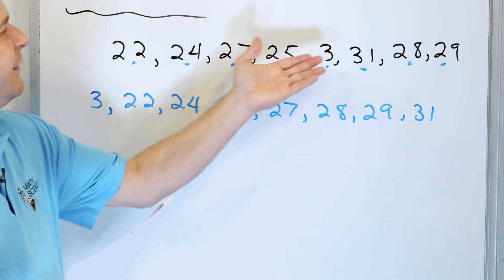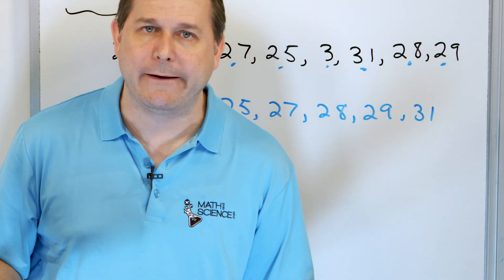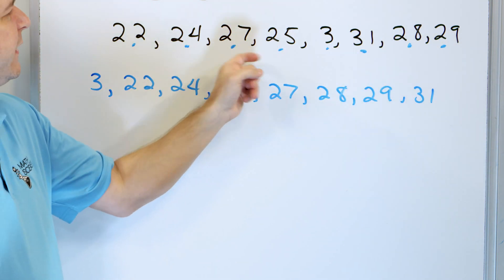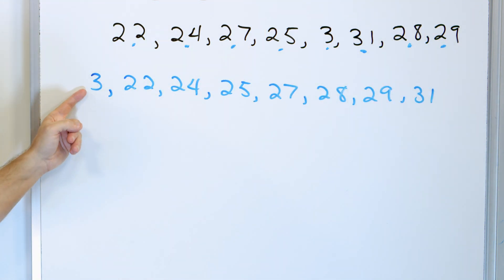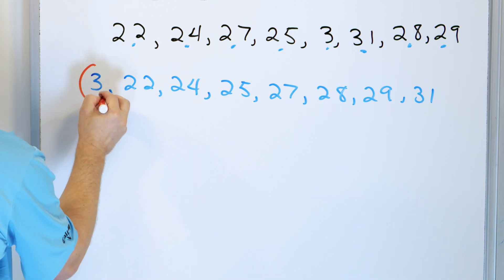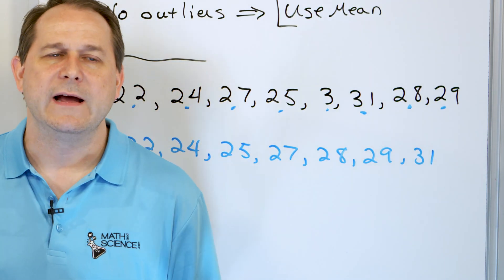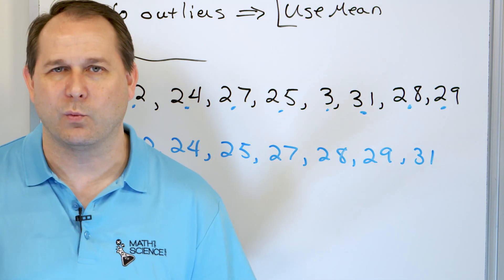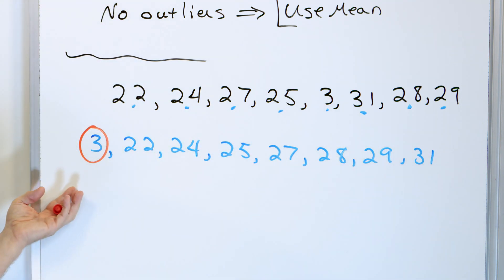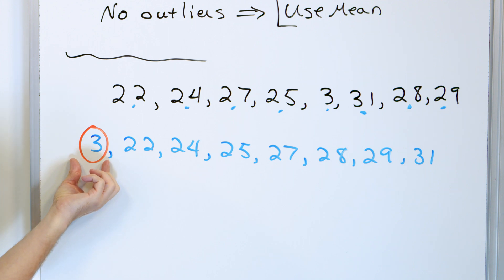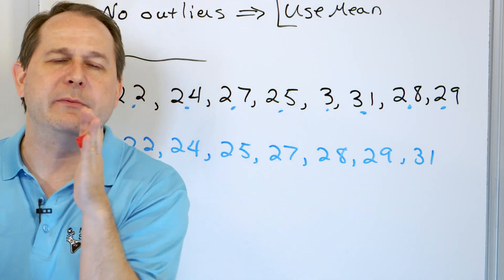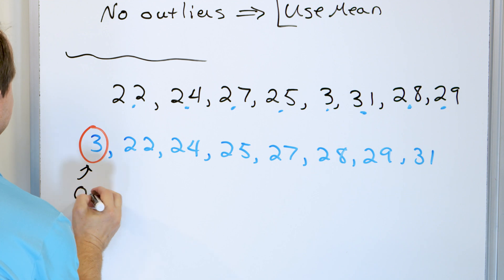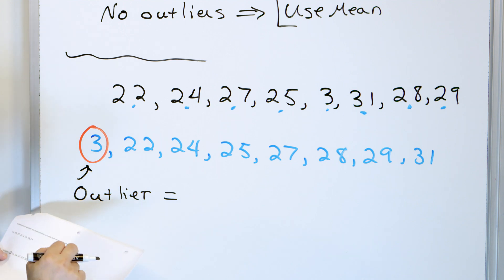This could be, for instance, the age that people get married in a certain town. We have 22-year-olds, 25-year-olds, 29-year-olds that get married — and then we have this outlier at three. Obviously no three-year-old is ever going to get married, so it's an outlier. It's probably an error in the data — they probably meant to put 30 or 31, but one digit was written down incorrectly. So because we have an outlier, we generally don't want to use the mean.